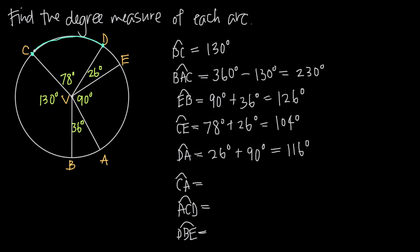Arc CA almost looks like a straight line between C and A, so we have to be careful to remember it's also a minor arc because we only have two letters. If we start at C and go around through D, E, and then to A, adding 78 plus 26 plus 90, we'd get something greater than 180 degrees. So we start at C and come the other way around to A, adding 130 degrees to 36 degrees, giving a total degree measure of 166 degrees.